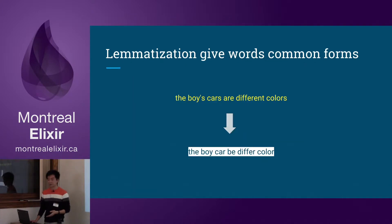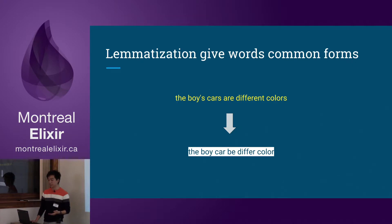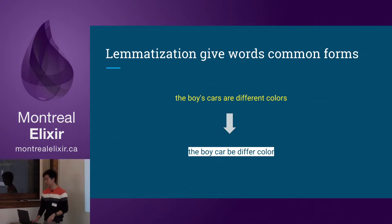For example, if you have 'the boy's cars are different color', if you do lemmatization or morphological parsing on it, you will get 'the boy car be different color', which is the essential root part of the word.